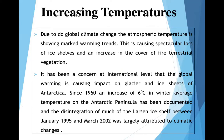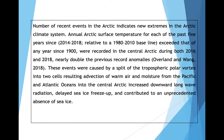Increasing temperatures is another major area of concern. Due to global climate change, atmospheric temperature is showing marked warming trends. This is causing spectacular loss of ice shelves and an increase in the cover of terrestrial vegetation. It has been a concern at the international level that global warming is impacting glaciers and ice sheets of Antarctica. Since 1960, there has been an increase of 6 degrees Celsius in winter average temperature in the Arctic peninsula. Annual Arctic surface temperature for the past five years has exceeded any year since 1900.